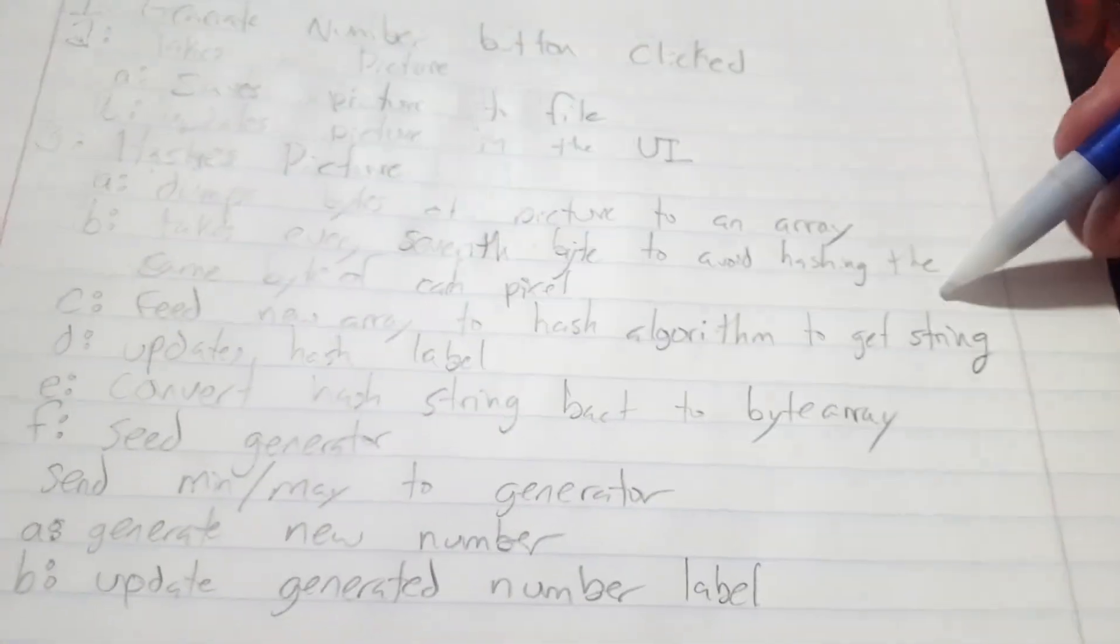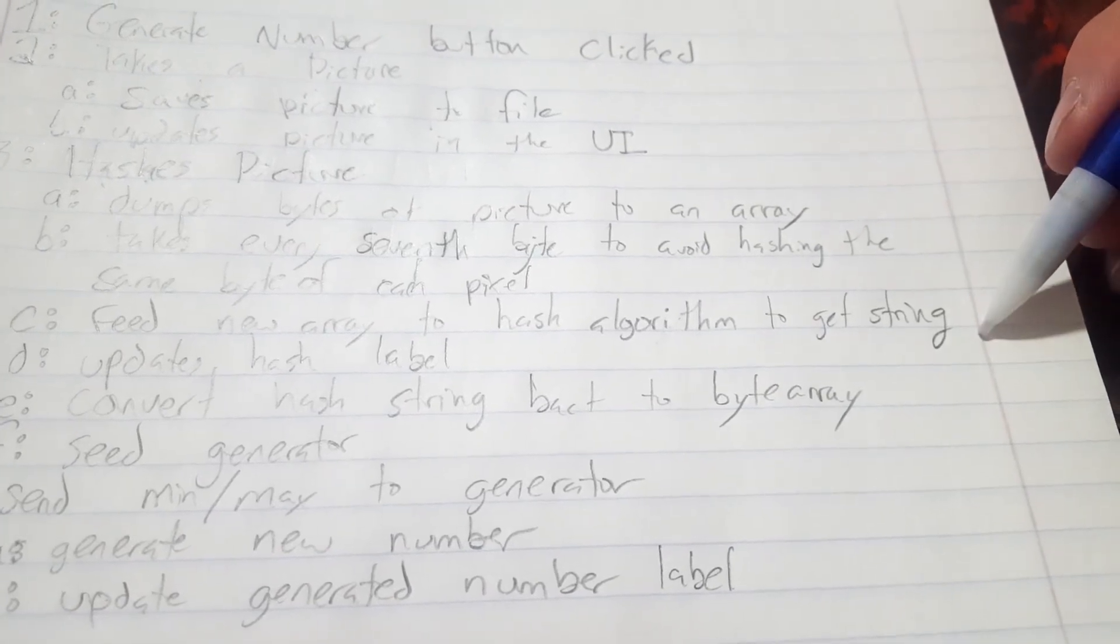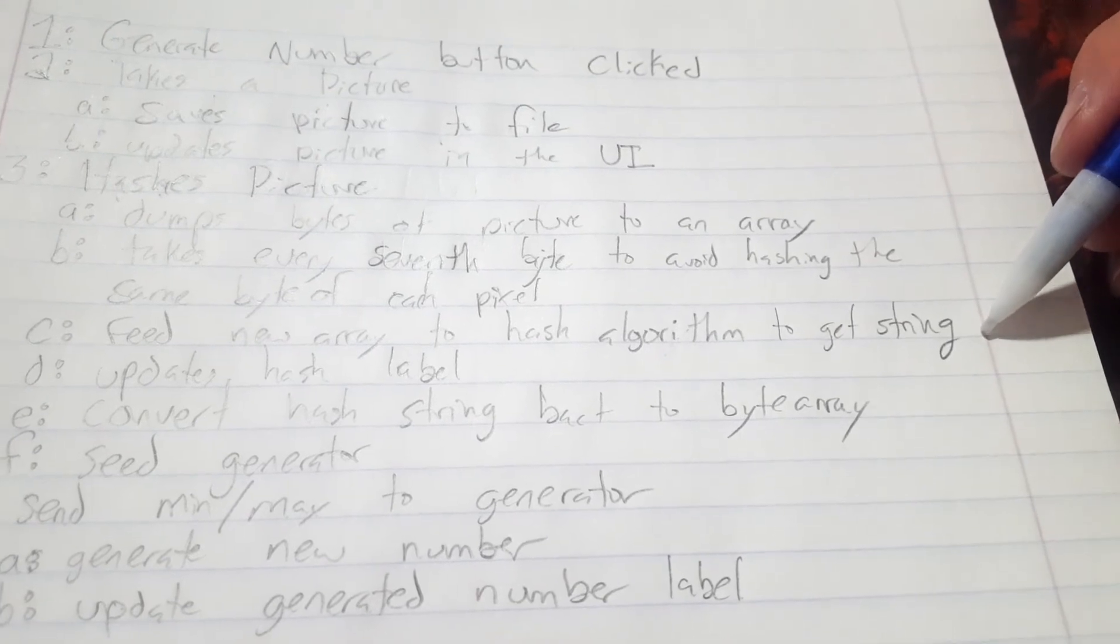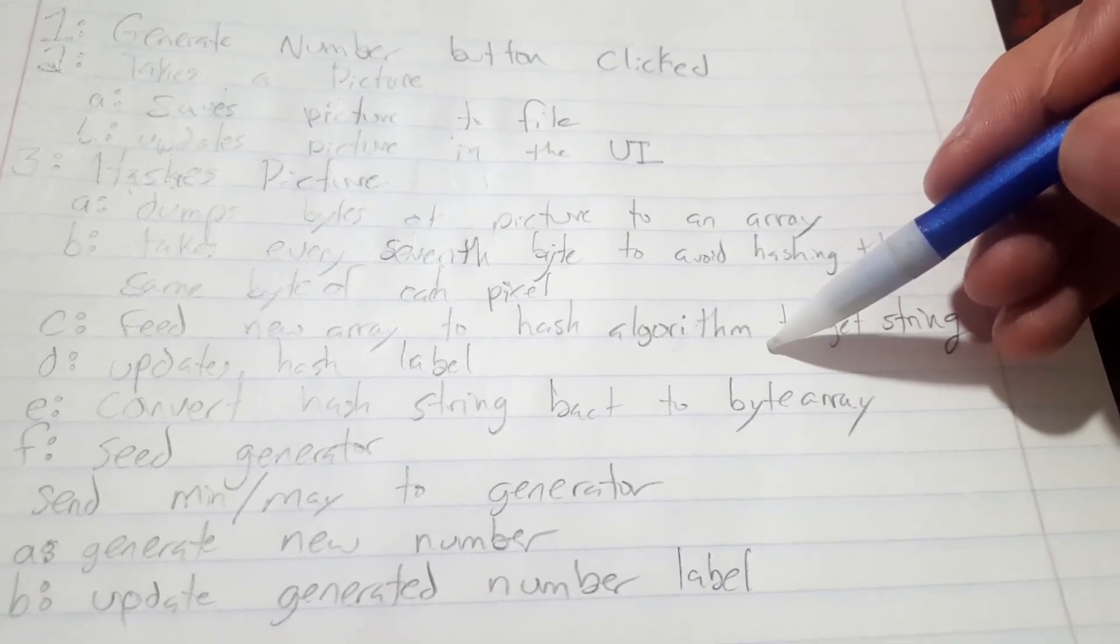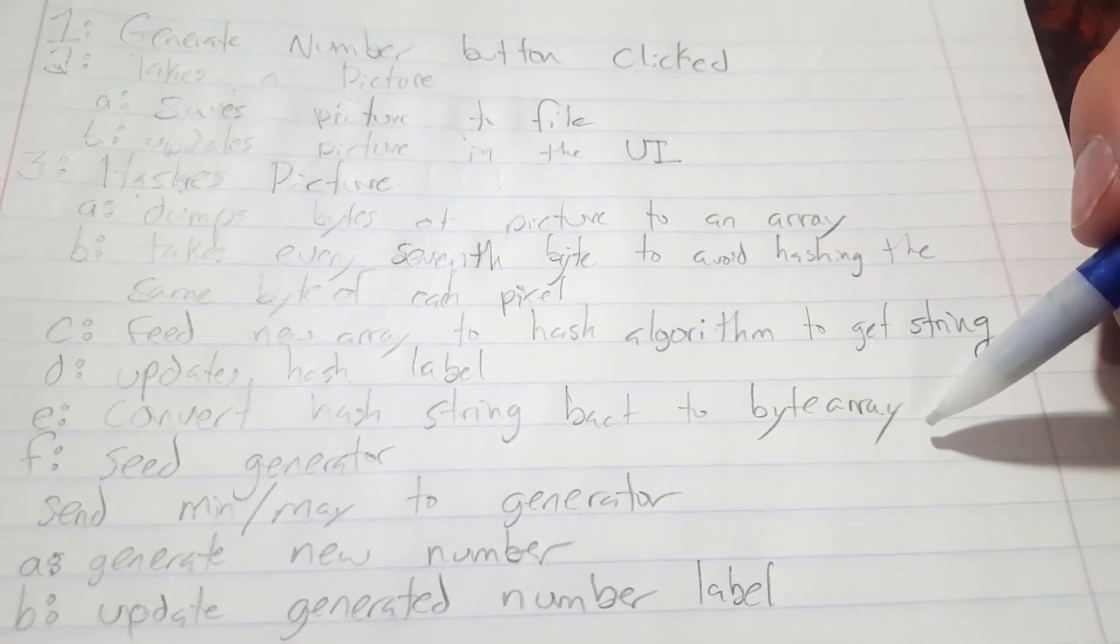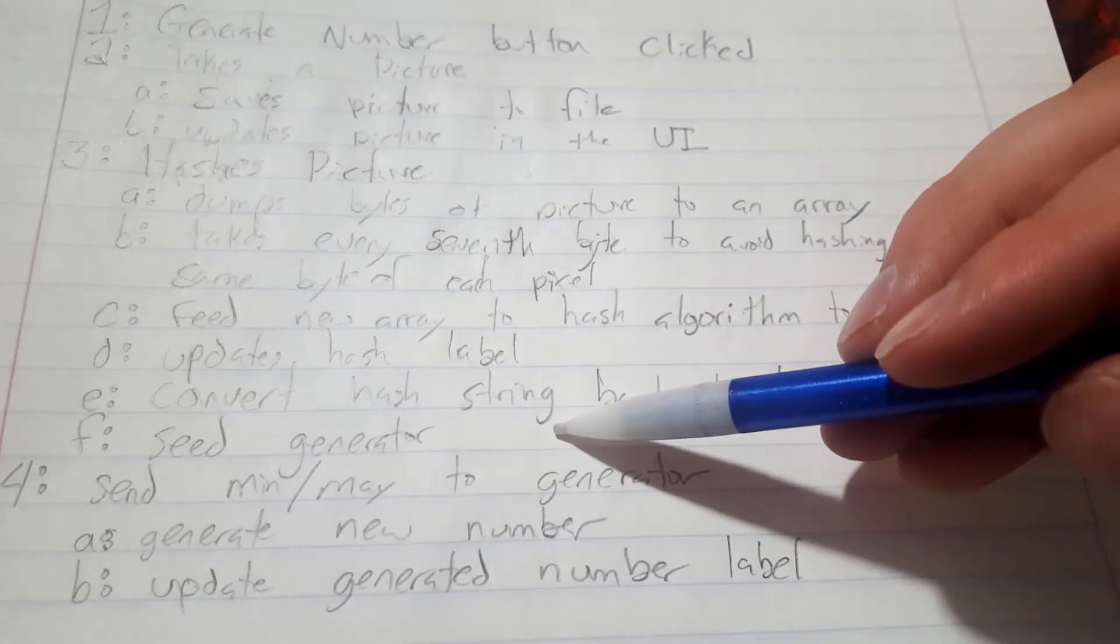So I just kind of skip a byte every now and then. Then it feeds the new array to the hash algorithm, which gets a string, and then it updates the hash label displayed in the program. Then that string gets converted back to a byte array, which then seeds the number generator.